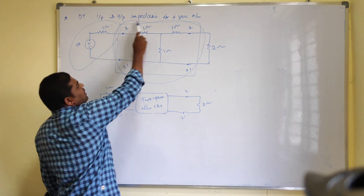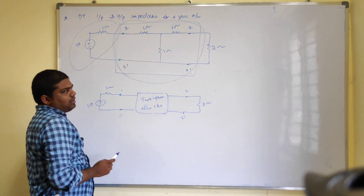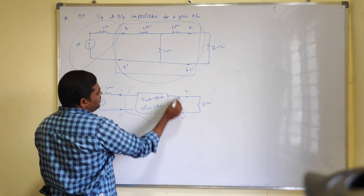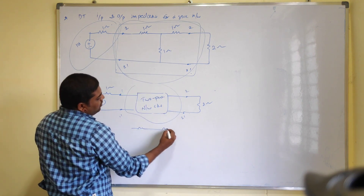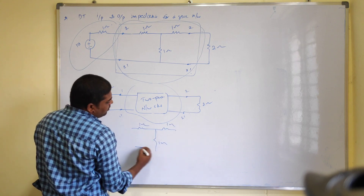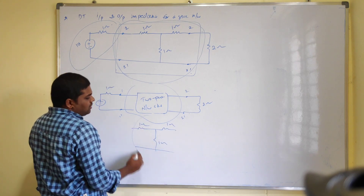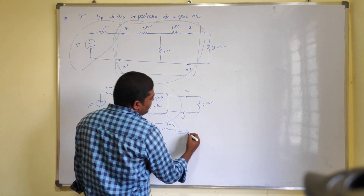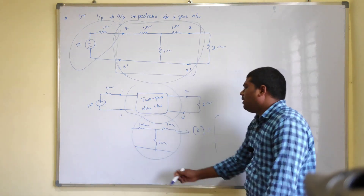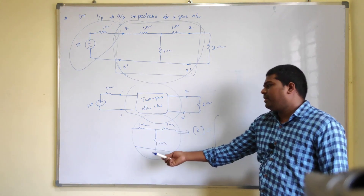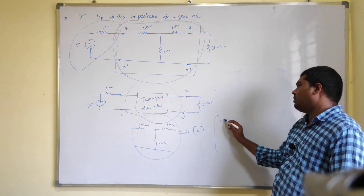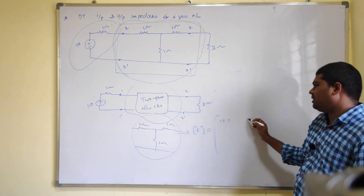This circuit looks like a T-network model. So for this T-network, we have one T-network with one ohm, one ohm, and one ohm resistance. For this network the Z-parameters are: for a T-network we can directly add these two elements as Z11, that means one plus one. And ZB is nothing but one.